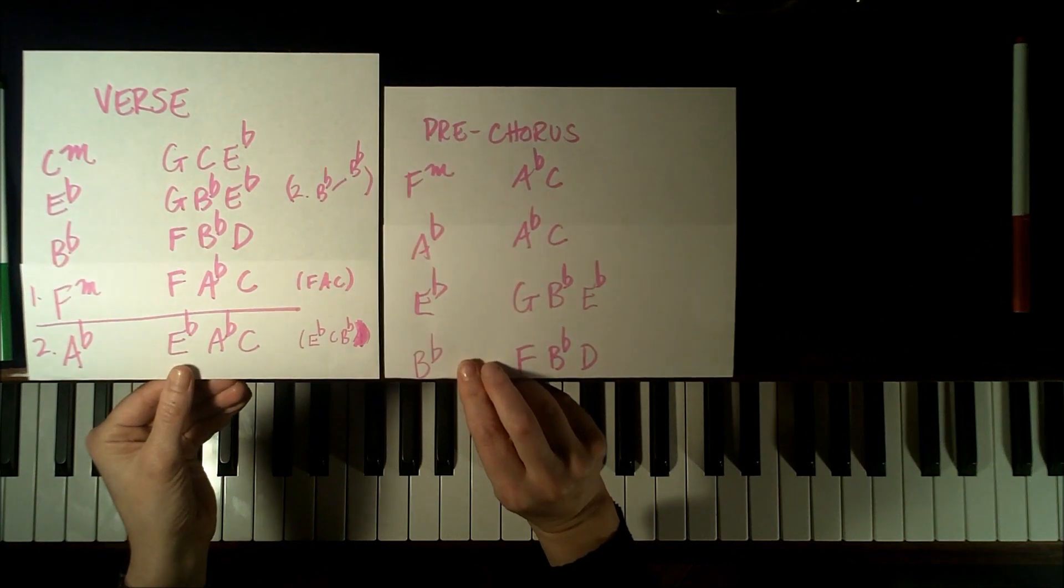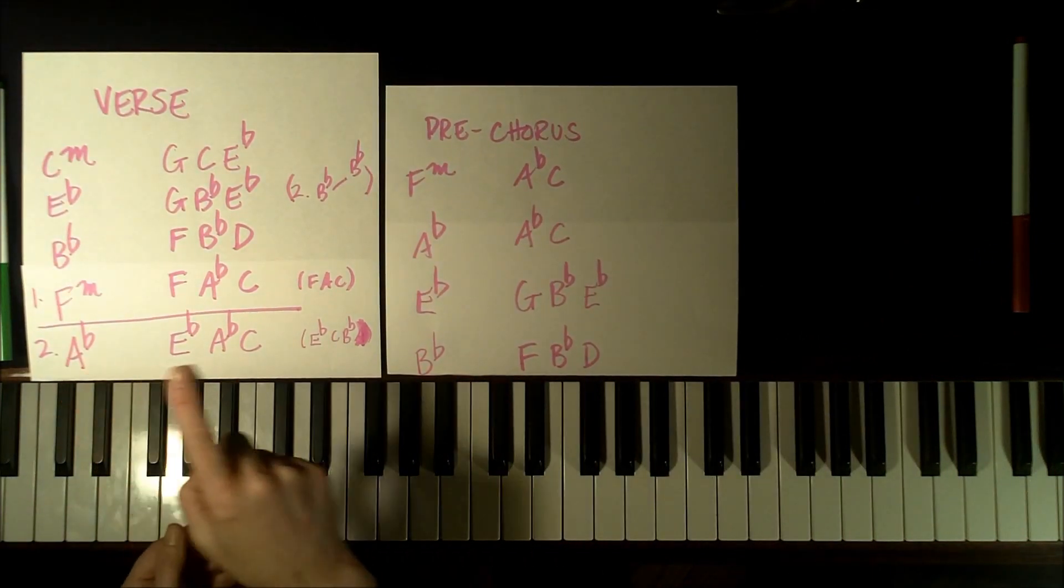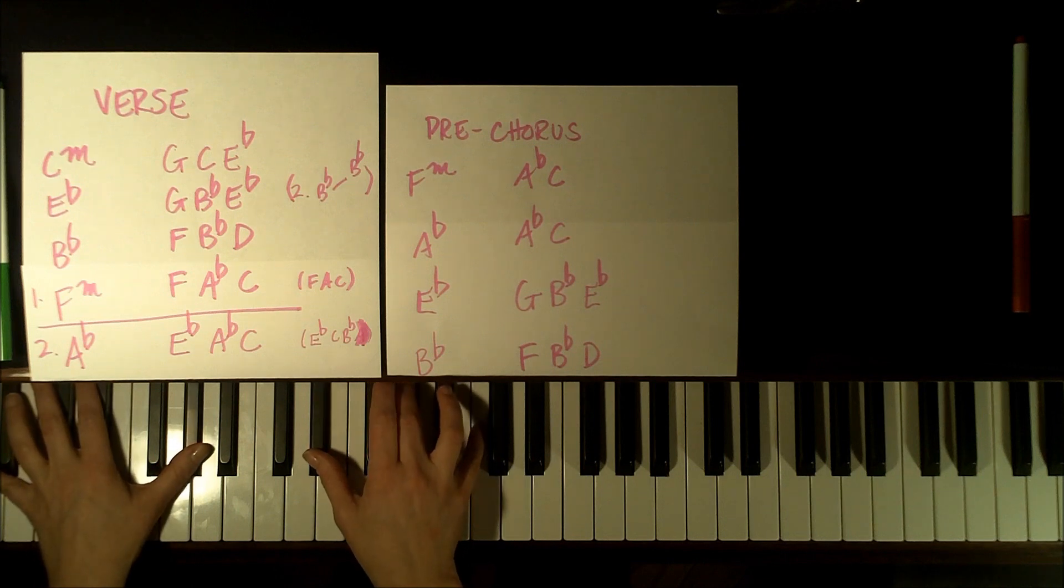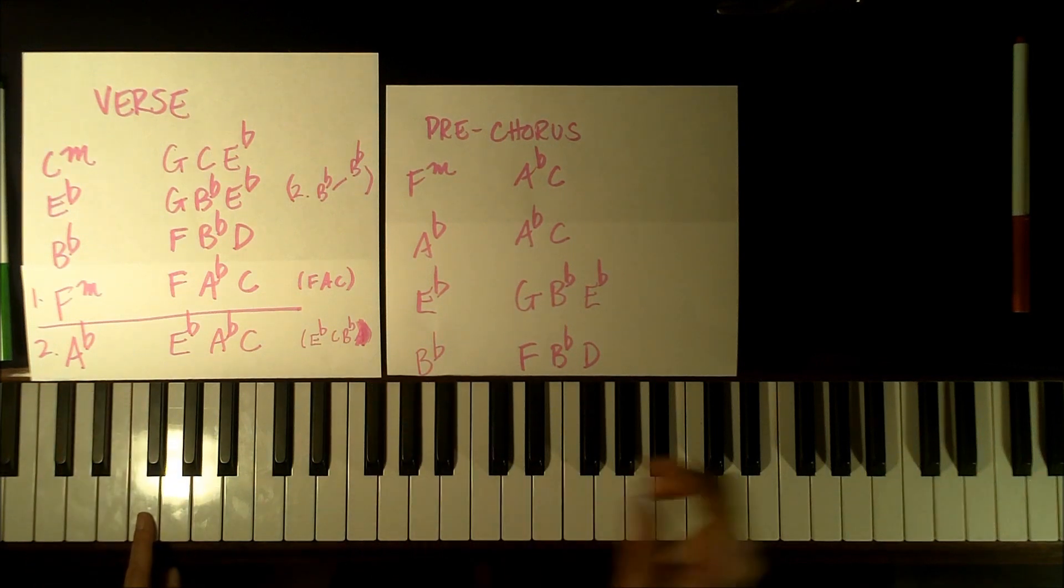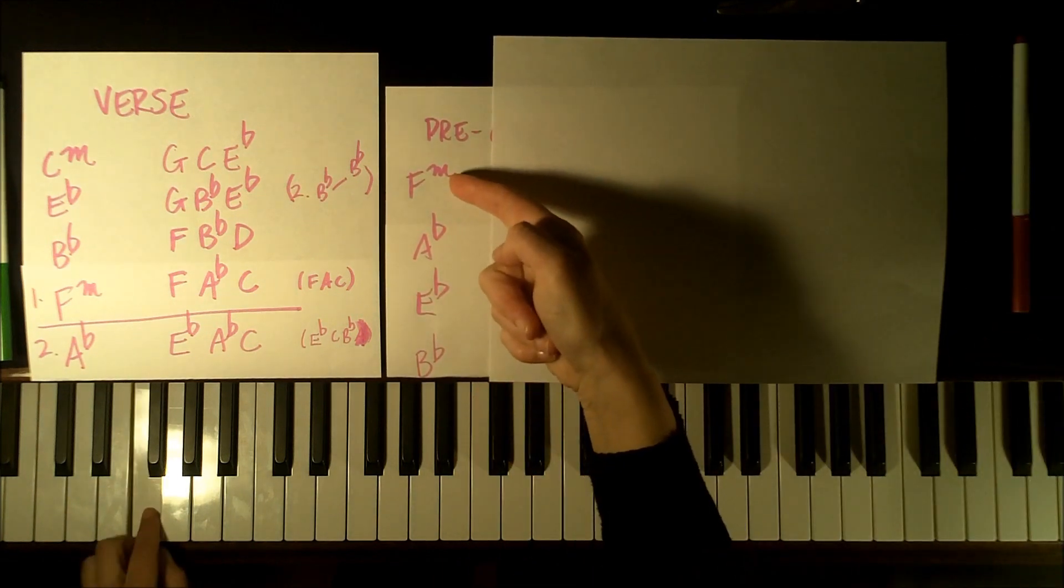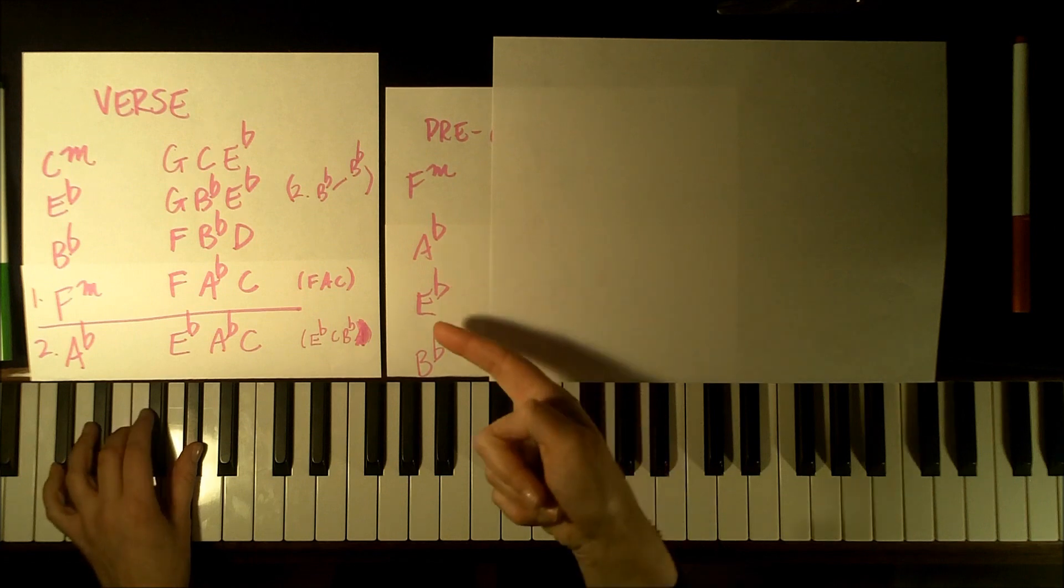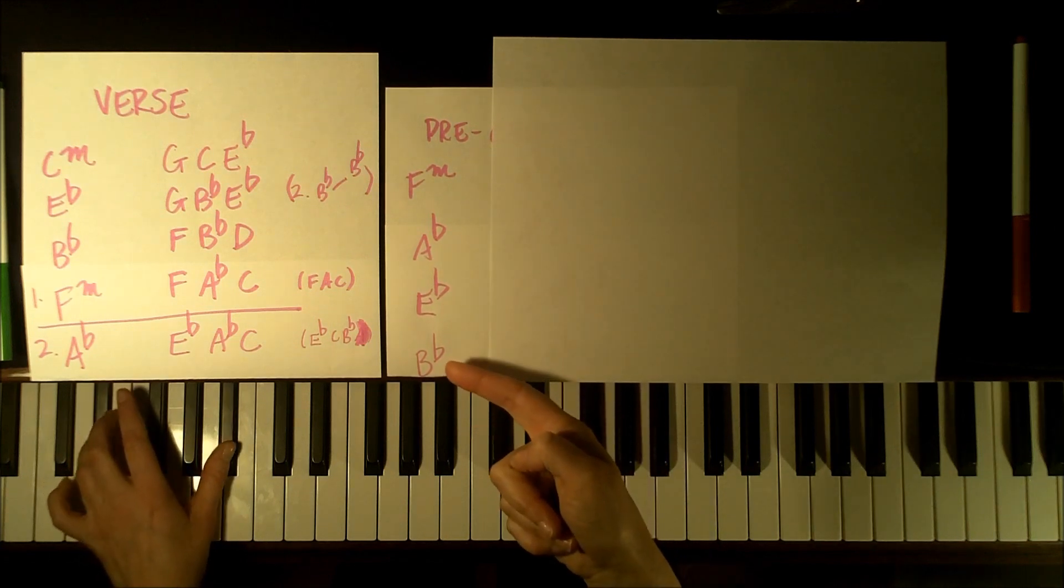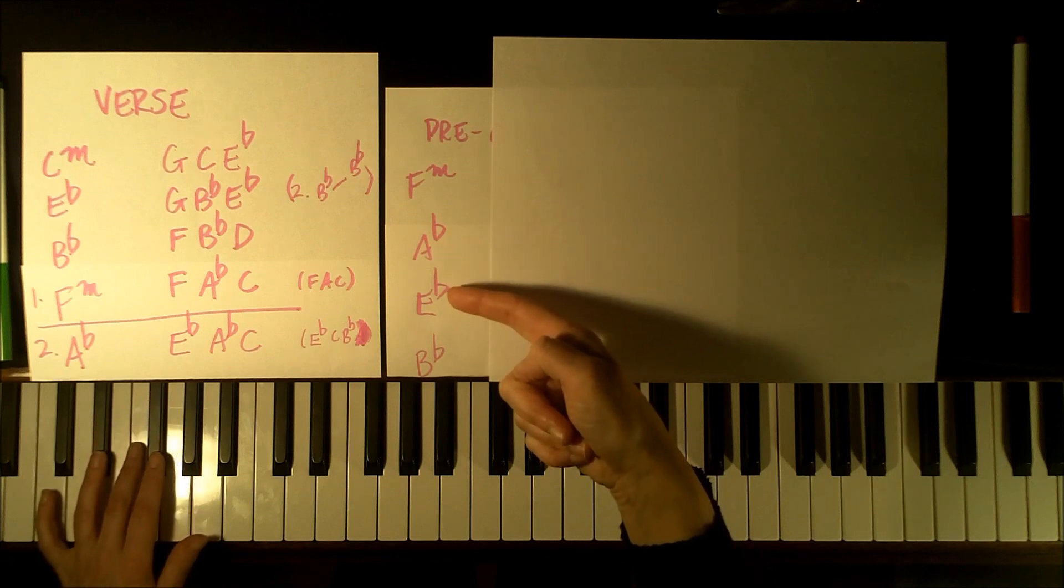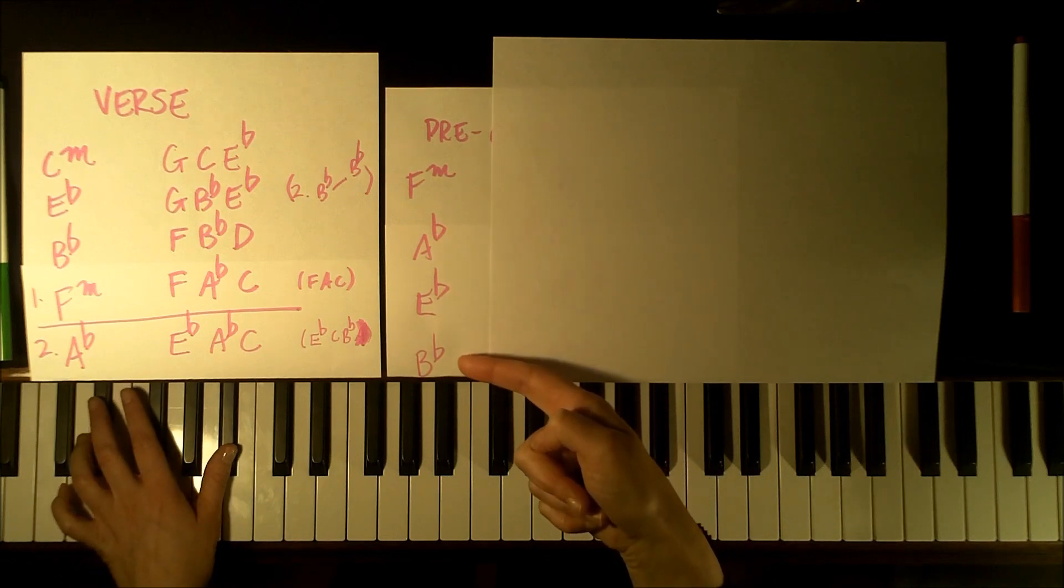And here are the chords for the pre-chorus. So we've just finished with the Ab. And now for this next section, my left hand is going to play the chord notes. F, Ab, Eb, Bb, and again, F, Ab, Eb, Bb.